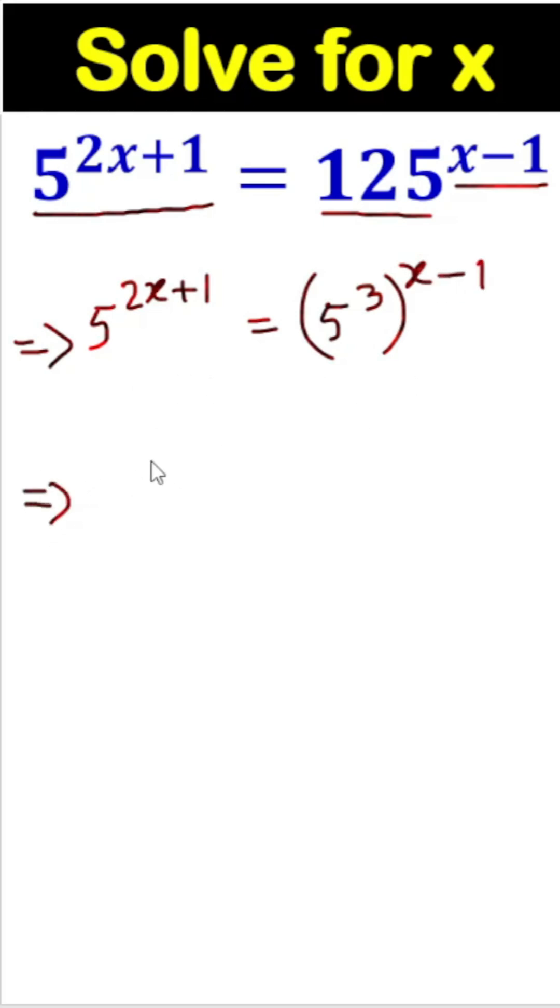Now, we can write 5 to the power 2x plus 1 equals 5 to the power 3 times x minus 1.